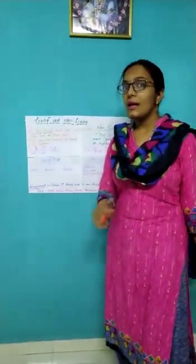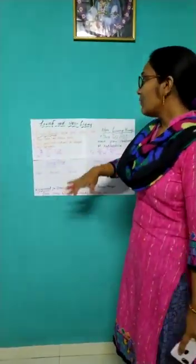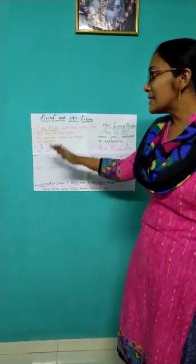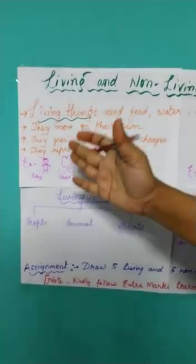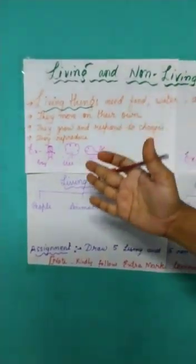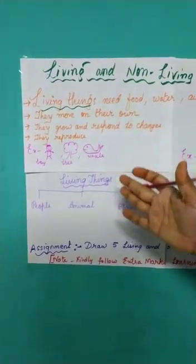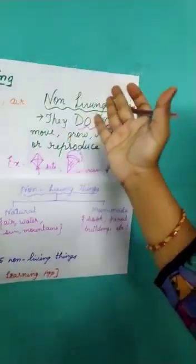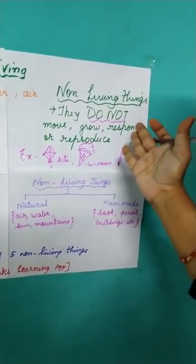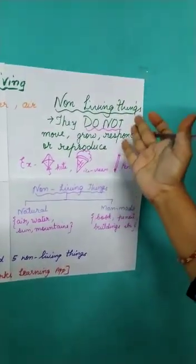So let me teach you what are living and what are non-living. As you can see, living things need food, water, and air. They move on their own. They grow and respond to changes. They reproduce. And what about the non-living things? Non-living things do not move, grow, respond, or reproduce.